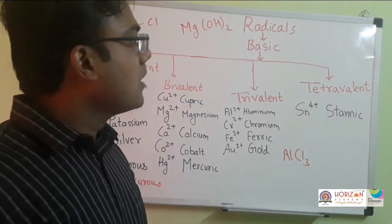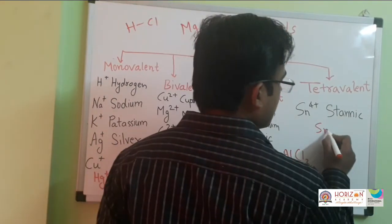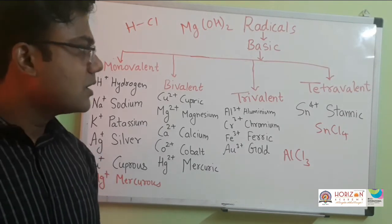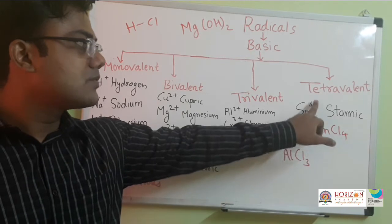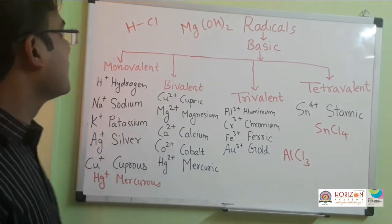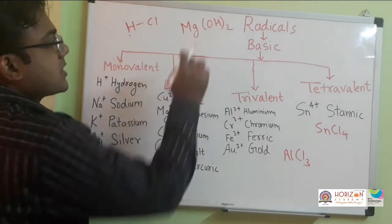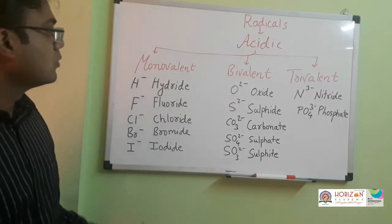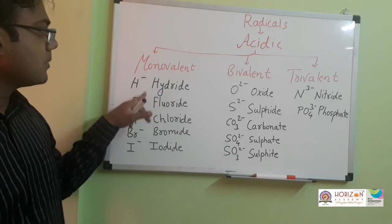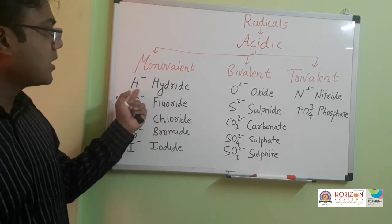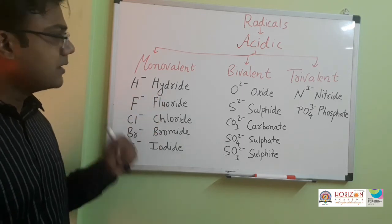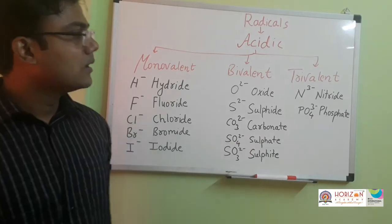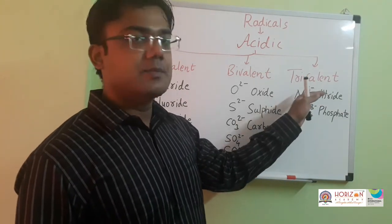Tetravalent means they can form four bonds — for example, SnCl4. The Latin name of tin is stannum, so stannic is used for Sn4 plus. When naming compounds, write the basic radical first: stannic chloride. Now for acidic radicals, they also have types: monovalent has single minus charge (examples: hydride, fluoride, chloride, bromide, iodide), bivalent has two minus charges (examples: oxide, sulfide, carbonate, sulfate), and trivalent has three negative charges (examples: nitride, phosphate).